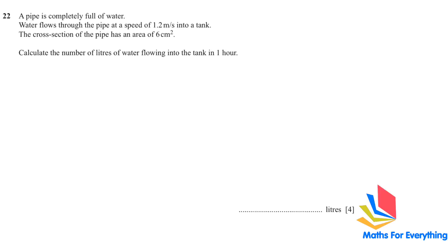Question number 22. A pipe is completely full of water. Water flows through the pipe at a speed of 1.2 meter per second into a tank. The cross section of the pipe has an area of 6 square centimeter. Calculate the number of liters of water flowing into the tank in one hour. So, let's write down the information. Always write down what has been given to you. Speed is 1.2 meter per second. And area is 6 square centimeter.